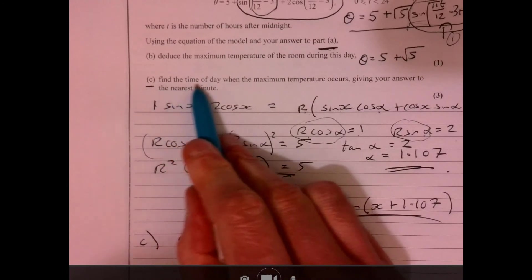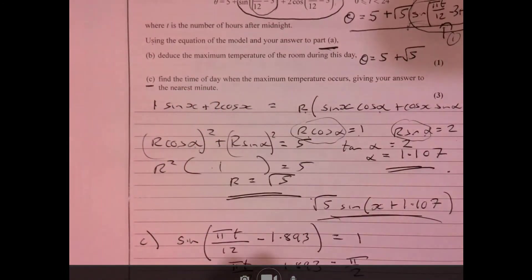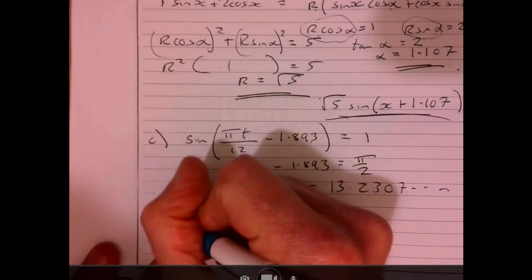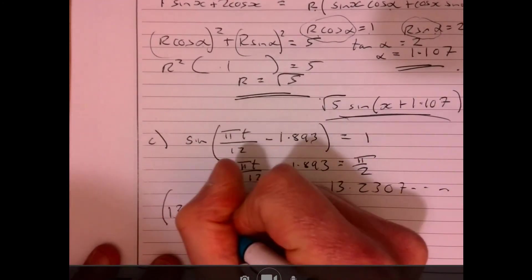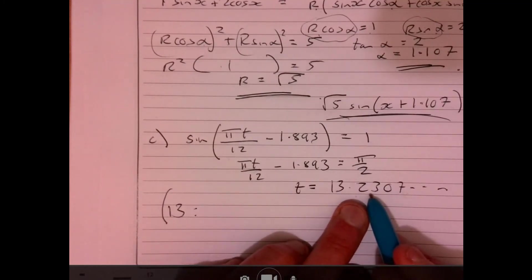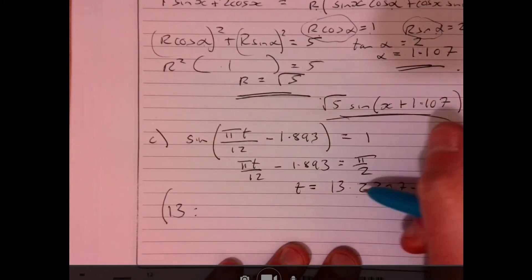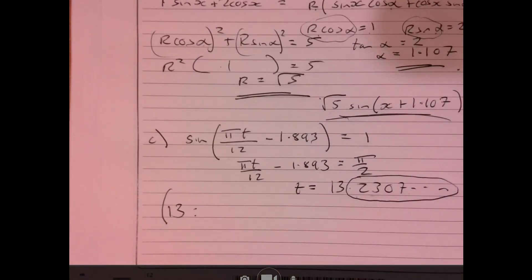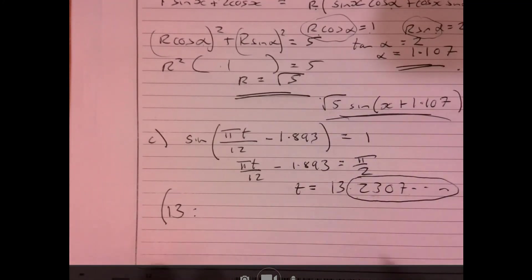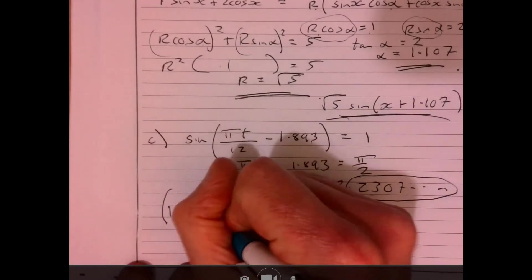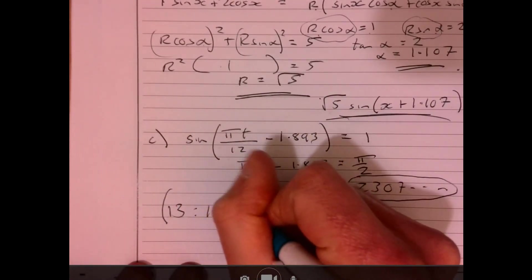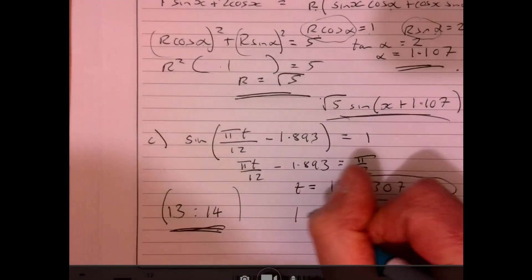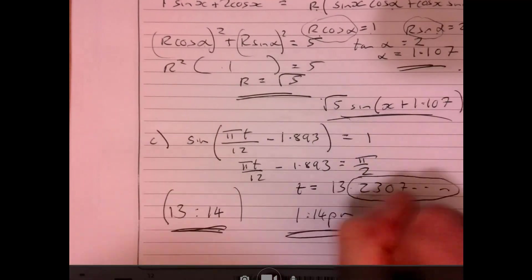Now the question says find the time of day. Remember that's a number of hours after midnight, so that's 13 hours, so it's going to be 13 something. But remember time isn't decimal, so that 0.23, you need to multiply that by 60, and then that gives you the number of minutes. To the nearest minute, it's going to be 13:14, or 1:14 PM.